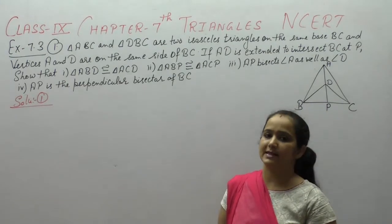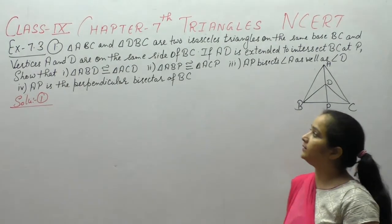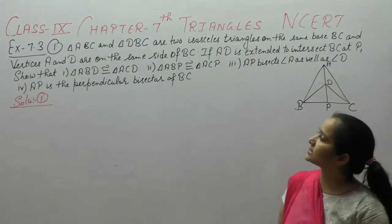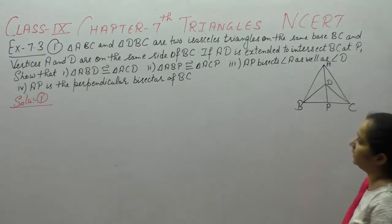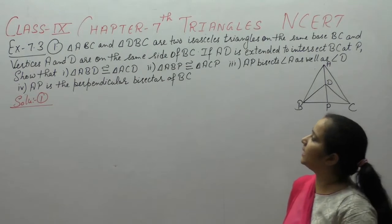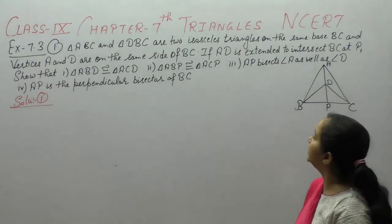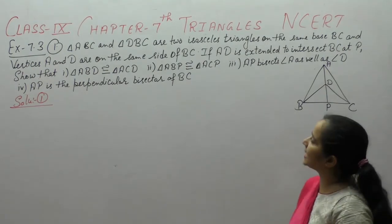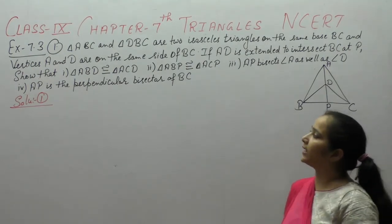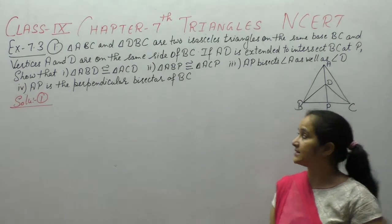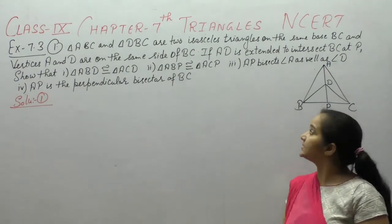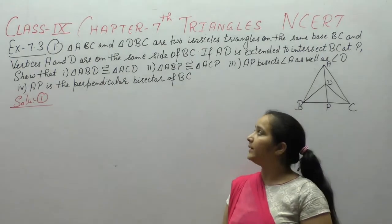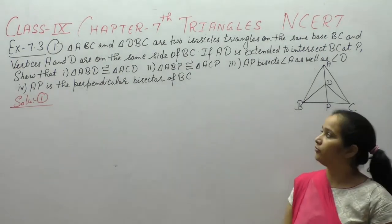Next we will start Exercise 7.3, question number 1. Triangle ABC and DBC are two isosceles triangles on the same base BC, and vertices A and D are on the same side of BC. If AD is extended to intersect BC at P, show that: triangle ABD is congruent to triangle ACD; triangle ABP is congruent to ACP; AP bisects angle A as well as angle D; and AP is the perpendicular bisector of BC.